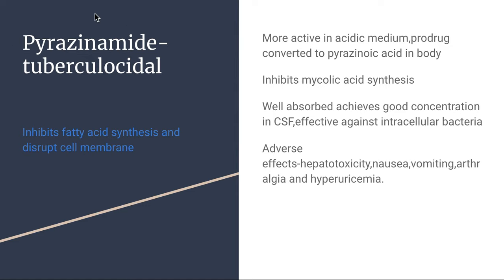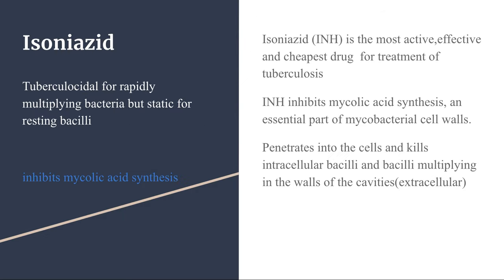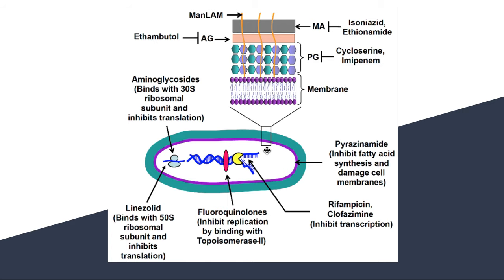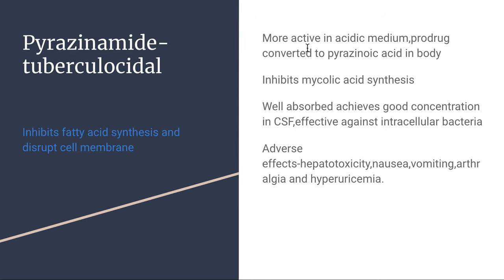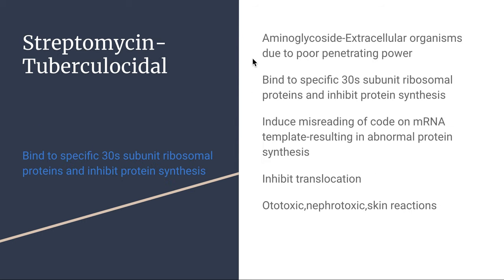The next drug is pyrazinamide. Pyrazinamide inhibits fatty acid synthesis and damages the cell membrane. It is a prodrug converted to pyrazinoic acid in the body, which is why it is more active in acidic medium. It is well absorbed, achieves good concentration in the CSF, and is effective against intracellular bacteria due to ready penetration. Its adverse effects include hepatotoxicity, nausea, vomiting, arthralgia, and hyperuricemia — because it reduces the excretion of uric acid — which can lead to gout arthritis.